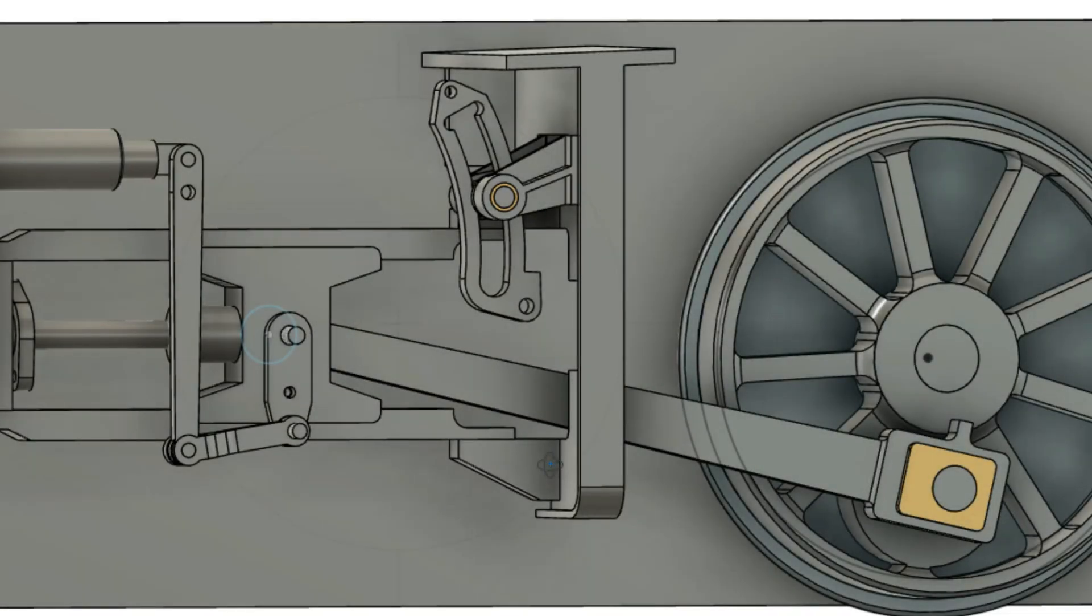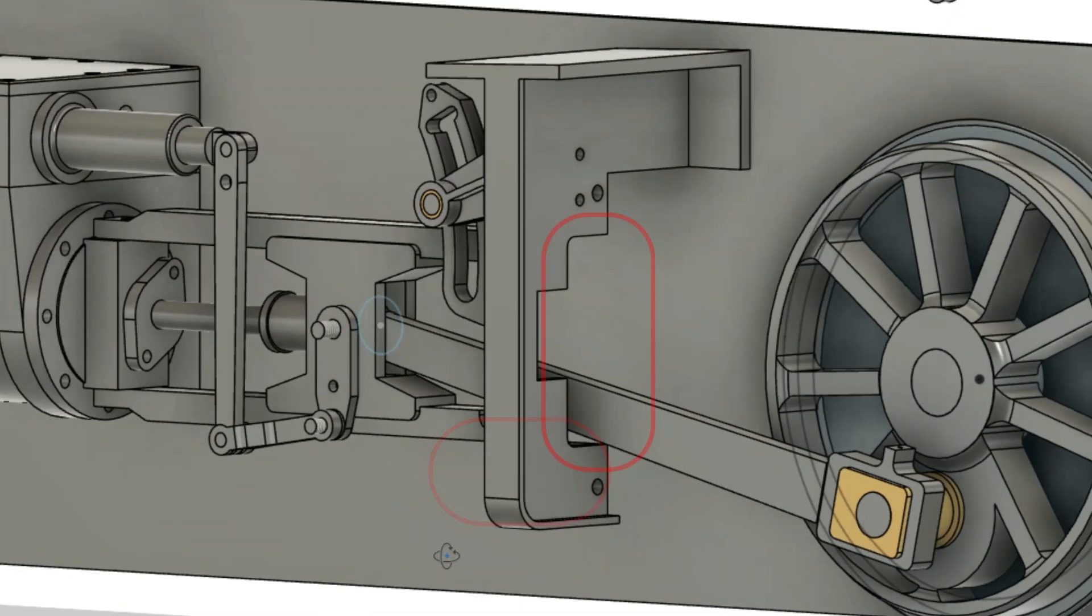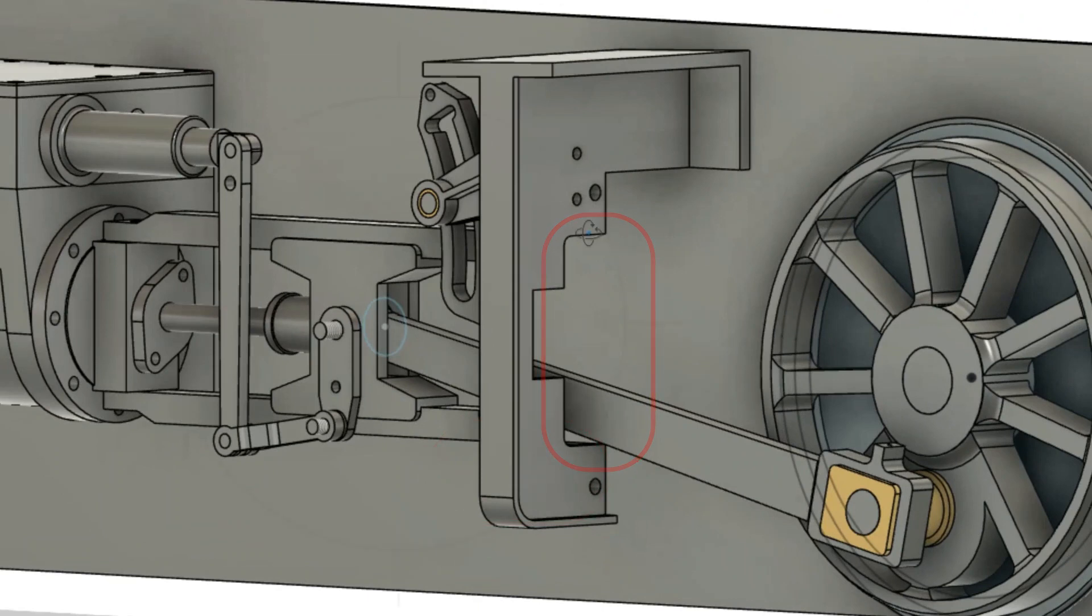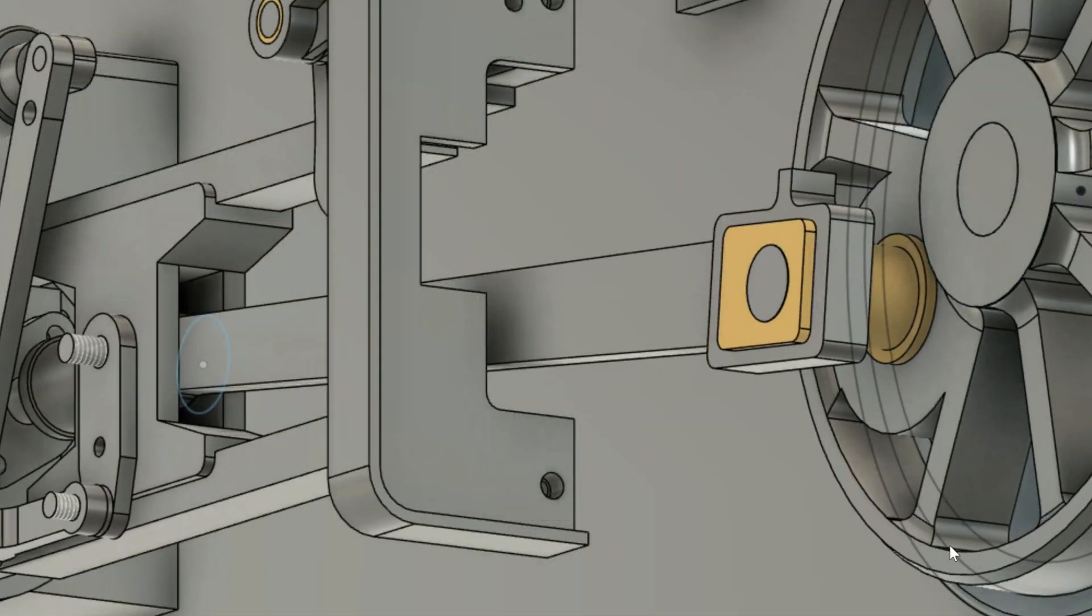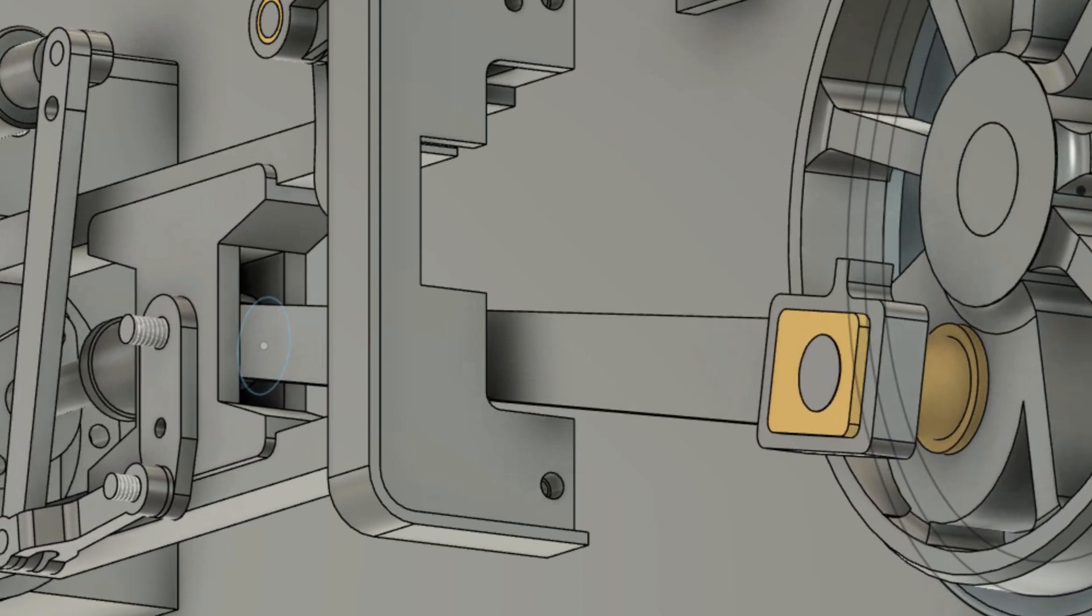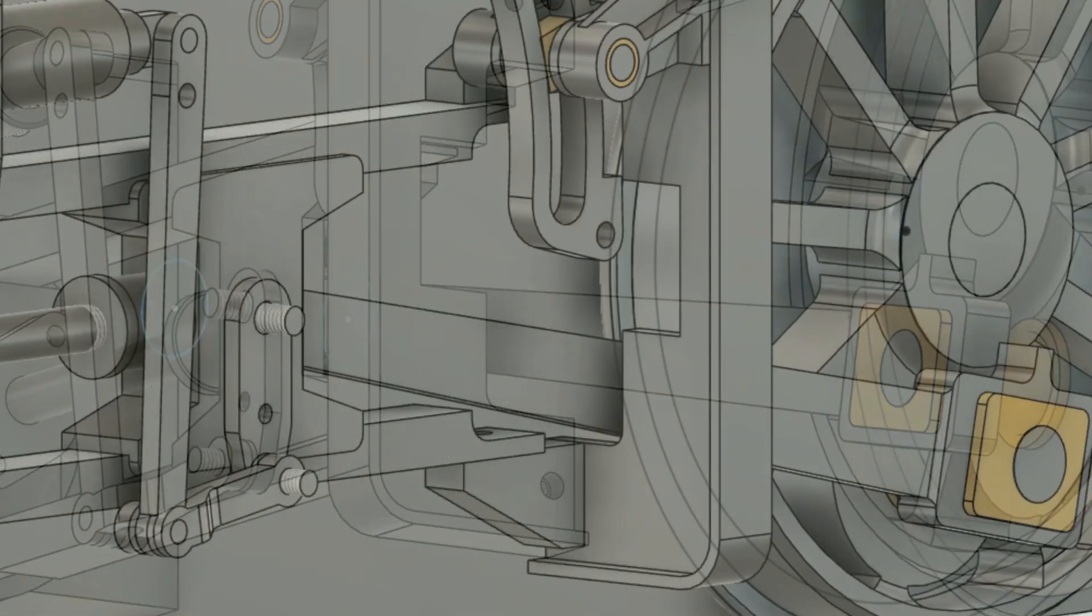Before committing myself with the hacksaw and files, I modelled the revised design for the slide bars, the slide bar blocks and the motion plate. Although this issue doesn't seem to be quite as bad at the top side, I've made the modifications to both the top and the bottom, not least because I do want it to be symmetric.